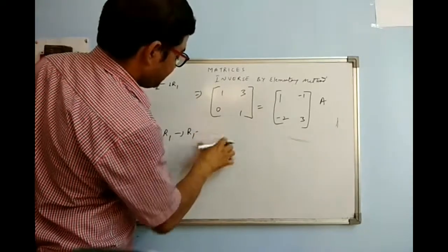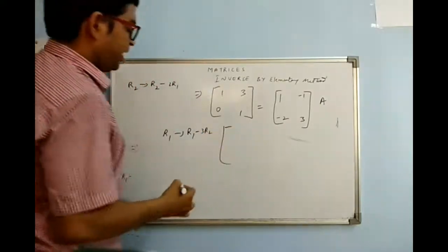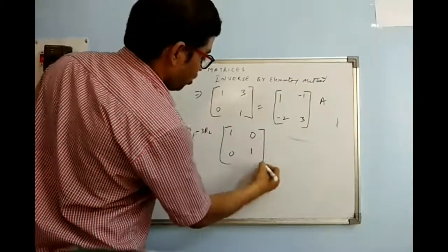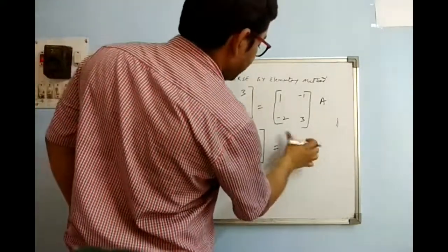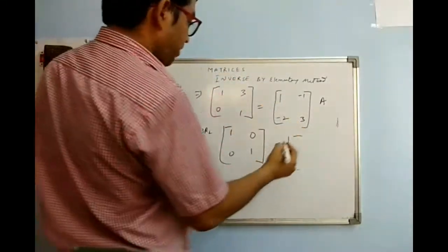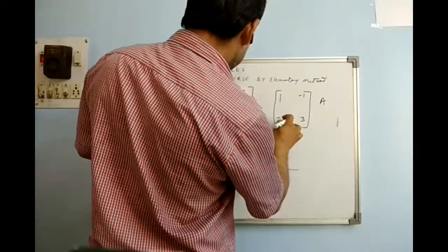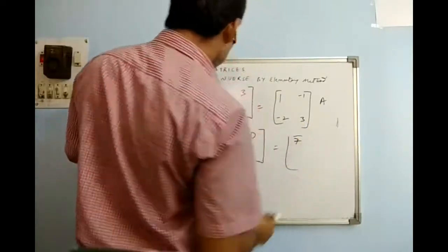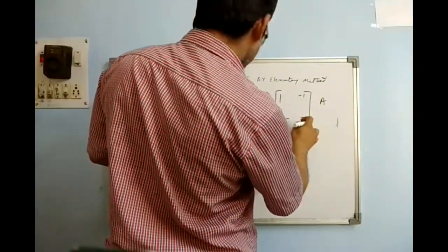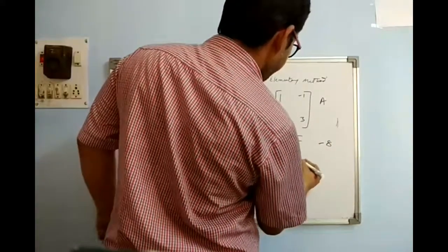So doing R1 minus 3·R2 gives [1, 0; 0, 1] on the left. Correspondingly I make the change on the identity side: R1 minus 3·R2 gives 1 minus 3·(−2) = 1 + 6 = 7, and −1 minus 3·3 = −1 − 9 = −8.